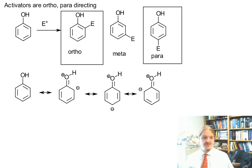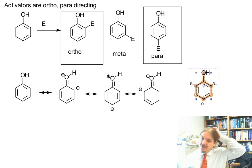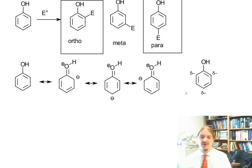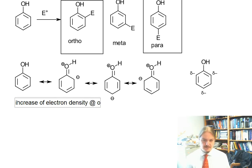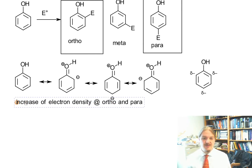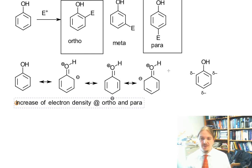And we can choose to represent this resonance situation by the following resonance hybrid with partial negative charges. So what we have here is an increase of electron density at ortho and para. So that gives us one way of understanding why ortho and para are preferred in this case.